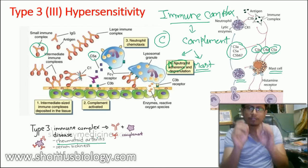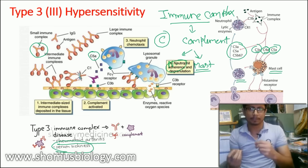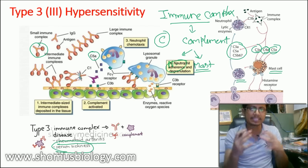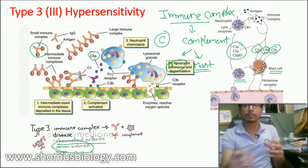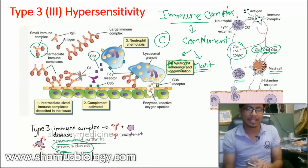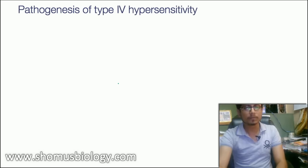This is Type 3 hypersensitivity. Examples include rheumatoid arthritis, where there is self-destruction of muscle tissue. Another example is serum sickness — when blood or serum from another individual is transferred into the body, the serum may contain complement proteins unique to that donor. The body can treat those as foreign and trigger a hypersensitivity reaction.